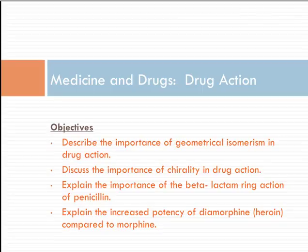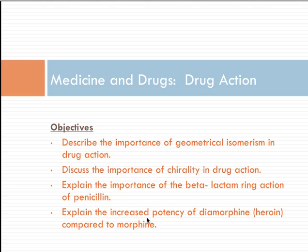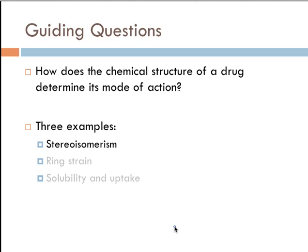We're continuing our unit on medicine and drugs, and we're going to be discussing drug action during this screencast. At the end, you should be able to describe the importance of geometric isomerism in drug action, the importance of chirality in drug action, the beta-lactam ring action of penicillin, and the increased potency of diamorphine (also known as heroin) compared to morphine. We'll be looking at three examples: stereoisomerism, ring strain, solubility, and uptake.